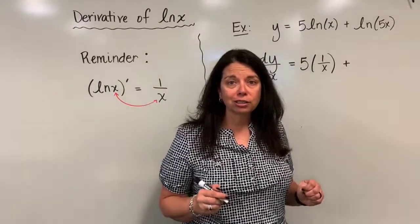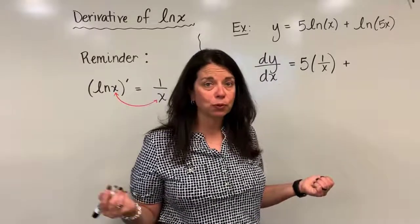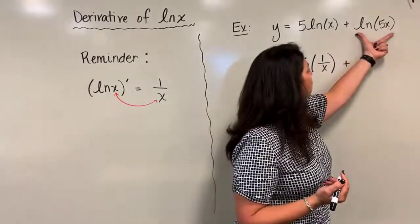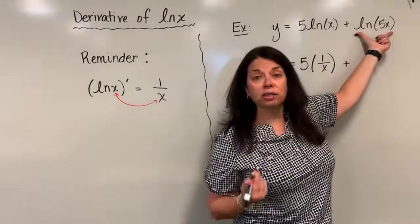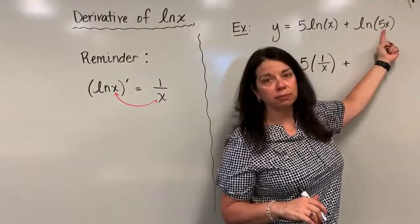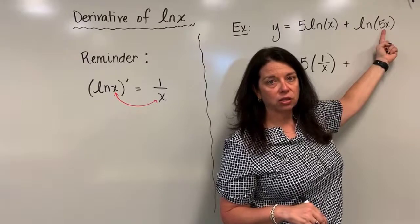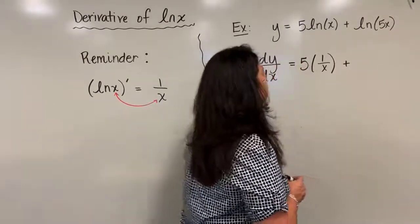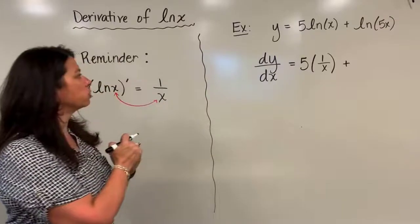Okay, well here I've got a composition of functions again. I'm going to have to use the chain rule, which tells me I'm going to have to find the derivative of this outside function, which of course is natural log x, and then ultimately multiply it by the derivative of this argument, this inside function 5x.